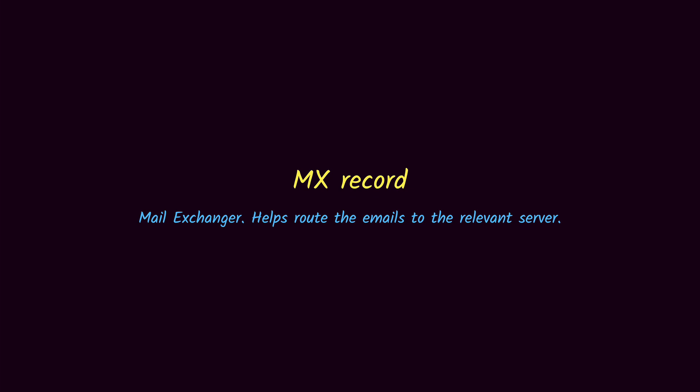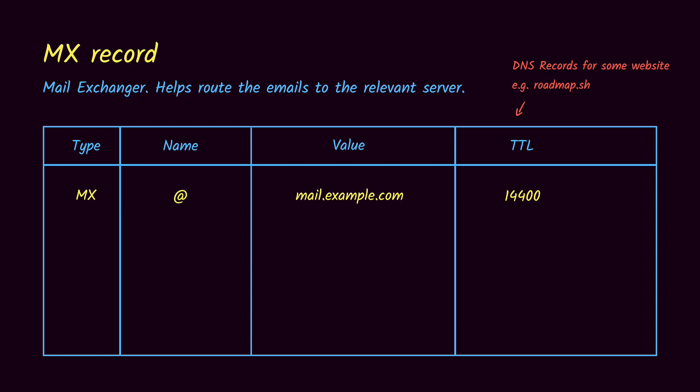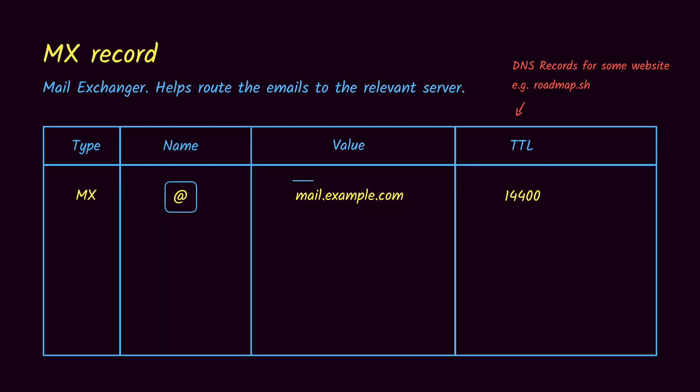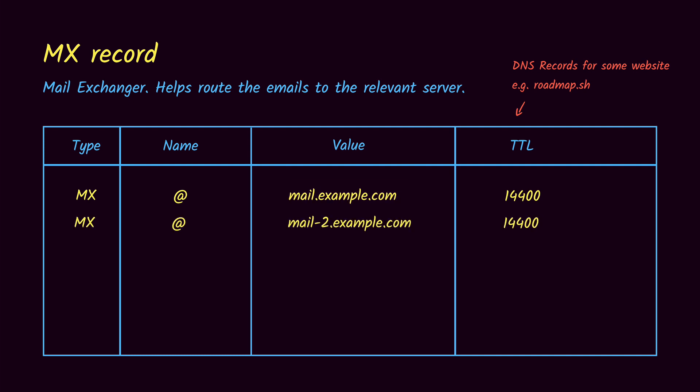The next one is the MX record, which stands for the mail exchanger record, and it helps in routing emails to the relevant servers. For roadmap.sh, an MX record with '@' as the name means that any emails sent to the naked domain — for example kamranahmas@roadmap.sh — will be handled by the server at mail.example.com. A website might have multiple MX records with two servers handling email for the naked domain. To decide which server handles the request, a priority number is assigned to each host. When an email is received it tries to resolve it using the lowest priority number; if that server works it is used, otherwise it falls back to the next lowest priority and continues until it finds a server that can resolve the request.